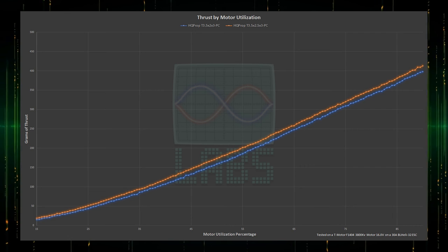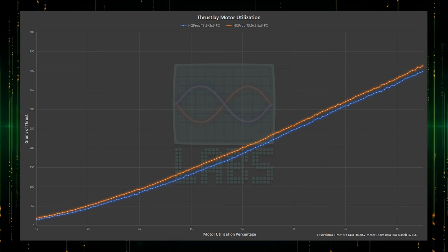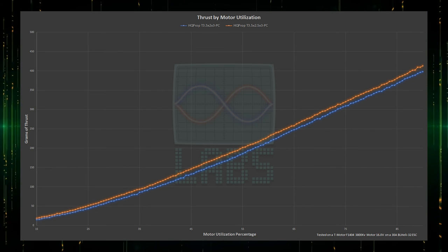This looks promising. In orange, you have the 2.5-inch pitch propeller, showing a constant gain over the existing leader.